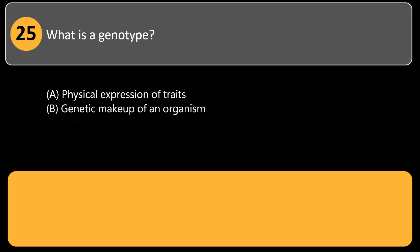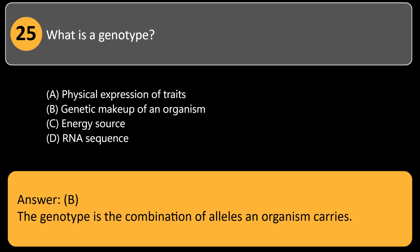What is a genotype? A. Physical expression of traits, B. Genetic makeup of an organism, C. Energy source, D. RNA sequence. Answer: B. The genotype is the combination of alleles an organism carries.